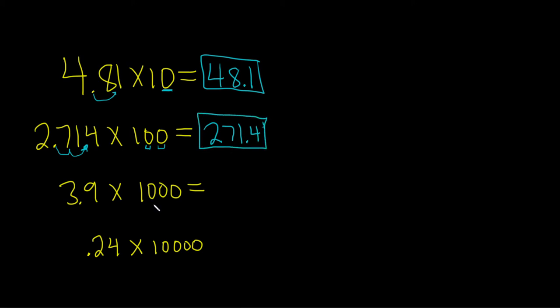And here we have three zeros, so you guessed it, three times. One, two, three. Now I'm going to write it over here because there's not a lot of room. We're moving it over three times. One, two, three. You've got to put zeros here now because there's nothing there. So this is 3,900.